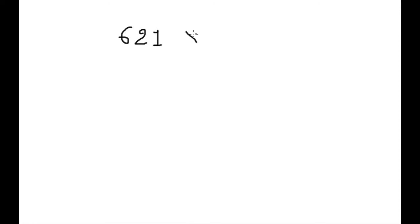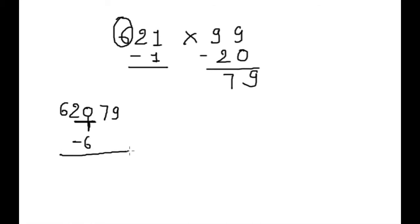621 into 99. Step 1. Subtract 621 minus 1. So this is 620. Now this 20 subtract from 99, 97, 79 and 79 we will add here. Now this 6, we will subtract from here. 6 minus 6, 97, 4, 16. 61479. This is our answer. So next example.